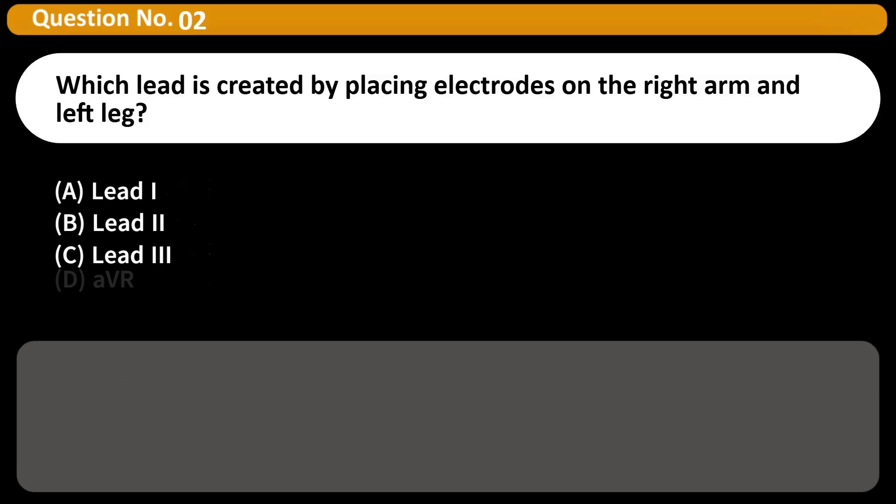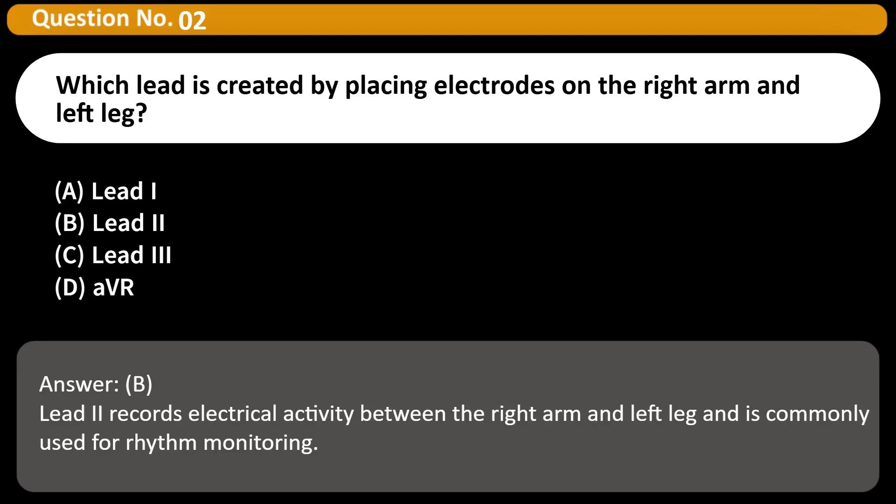Which lead is created by placing electrodes on the right arm and left leg? A. Lead I B. Lead II C. Lead III D. AVR Answer B. Lead II records electrical activity between the right arm and left leg and is commonly used for rhythm monitoring.